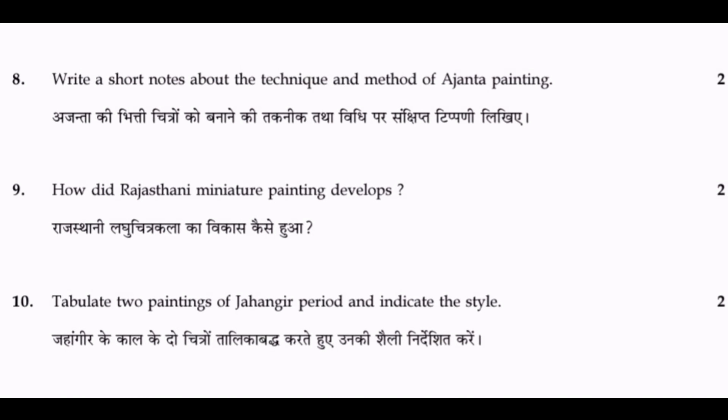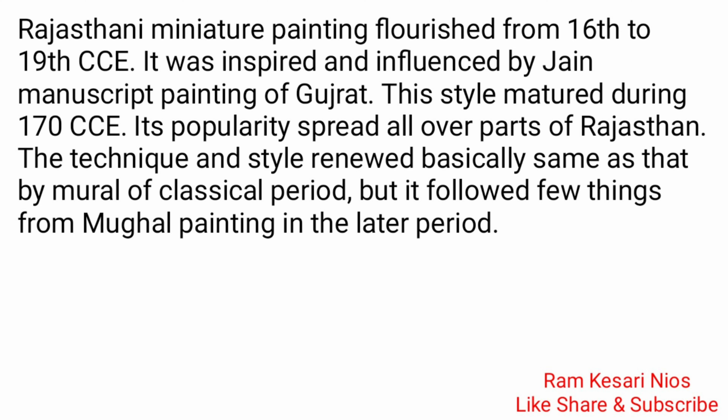Question 9: How did Rajasthani Miniature Painting develop? Rajasthani Miniature Painting flourished from the 16th to 19th century CE. It was inspired and influenced by Jain Manuscript Painting of Gujarat. This style matured during the 17th century CE. Its popularity spread all over parts of Rajasthan. The technique and style remained basically the same as murals of the classical period, but it followed a few things from Mughal painting in the later period.